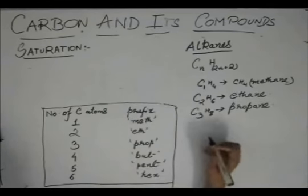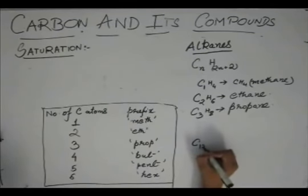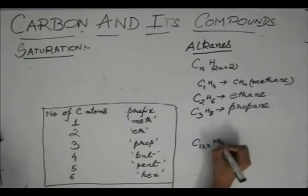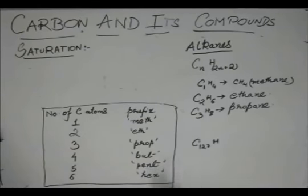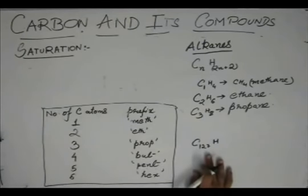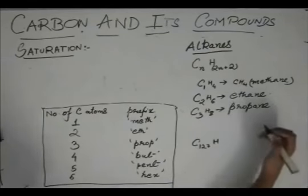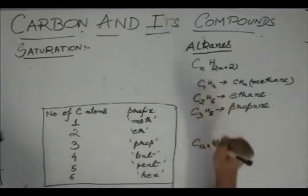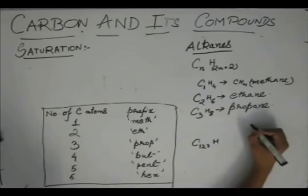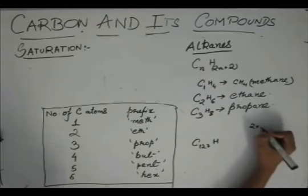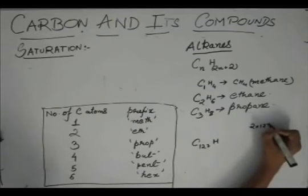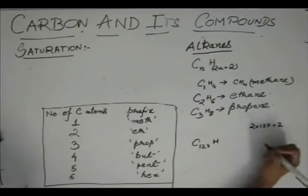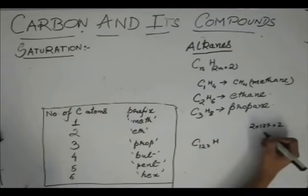So now we can easily find what C127 will be. If it's C127 and it's an alkane, the number of hydrogen atoms in that compound will be, N is 127 over here, so H will be 2 into N plus 2.